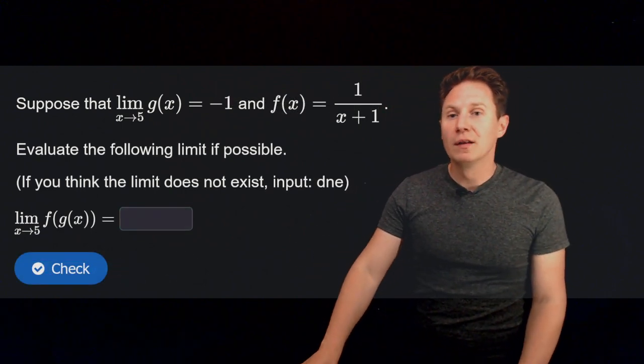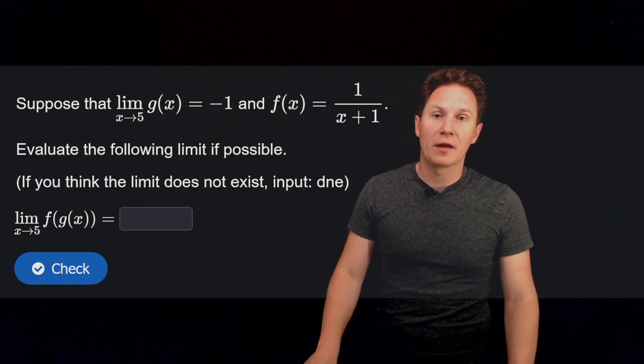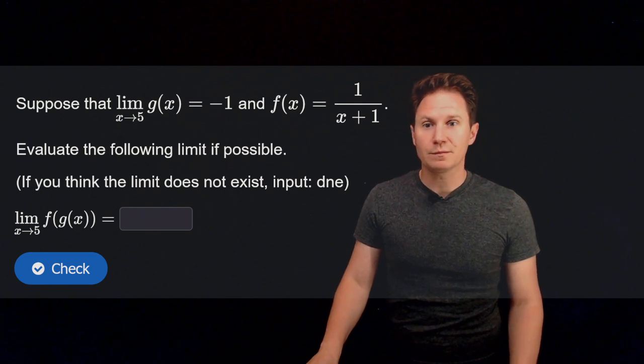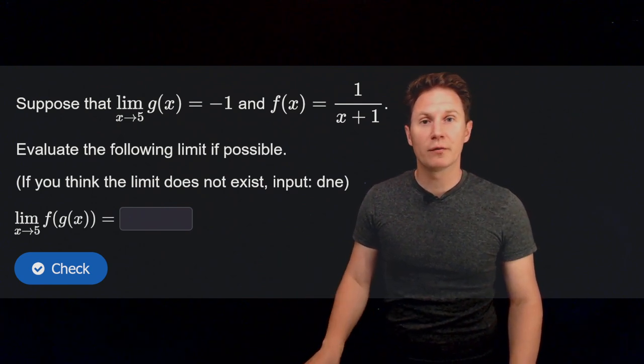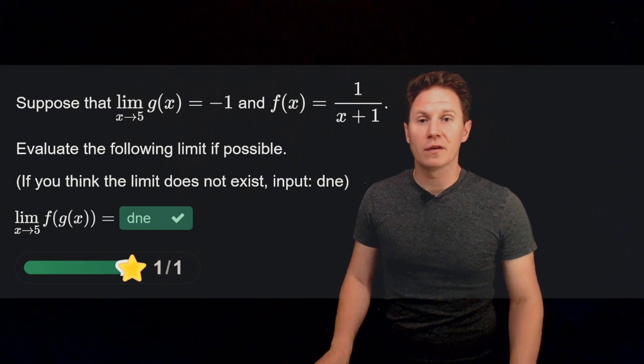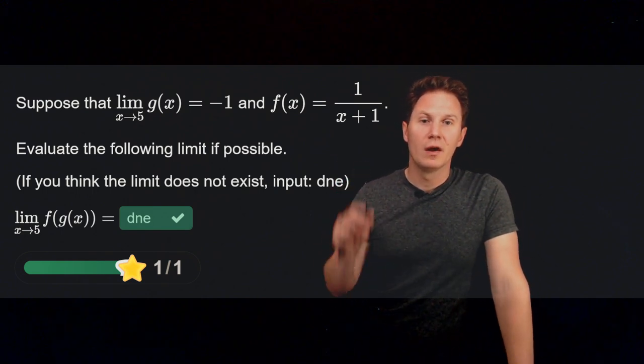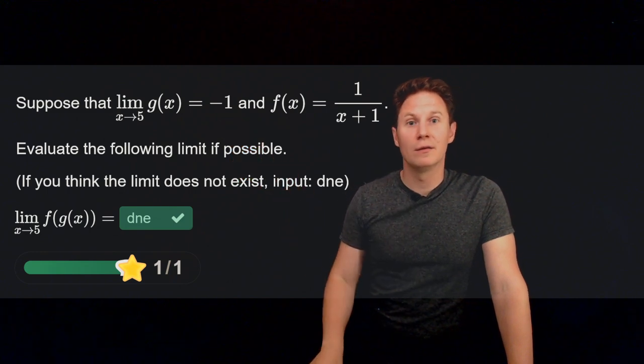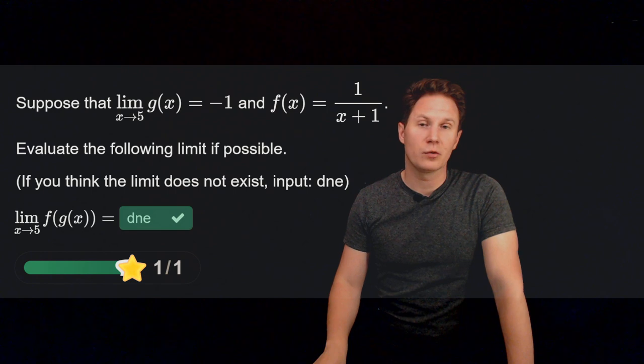Next, suppose that the limit as x approaches 5 of g of x is negative 1, and f of x is now 1 over x plus 1. What's the limit as x approaches 5 of f of g of x? Pause the video and input your answer in the box. So the limit does not exist in this case, and it is because f is not defined at x equals negative 1, which is exactly the limit of g as x approaches 5.